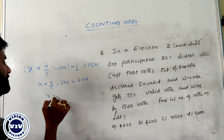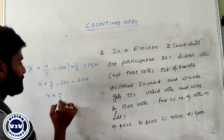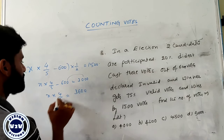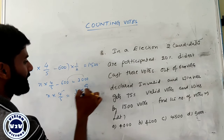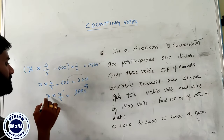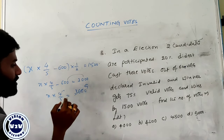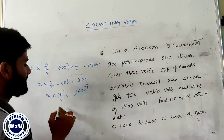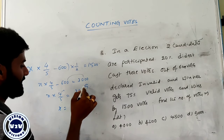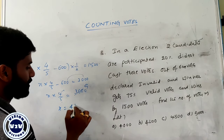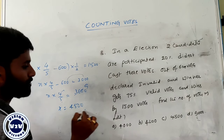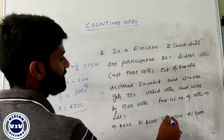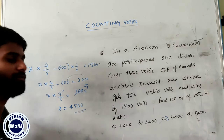X into 4 by 5 exactly equals 3600. This is only for 900 times. X equals 5 by 4 of 900, so x equals 4500. Answer: 4,500. The total number of votes are 4,500.